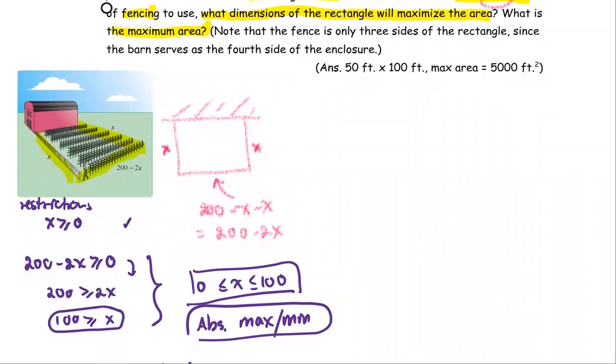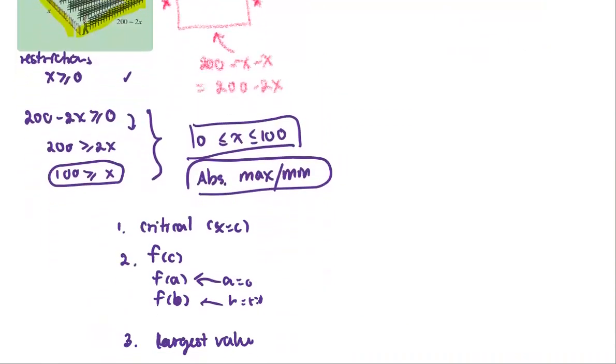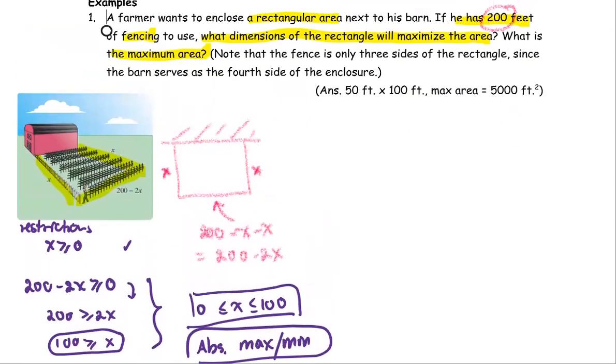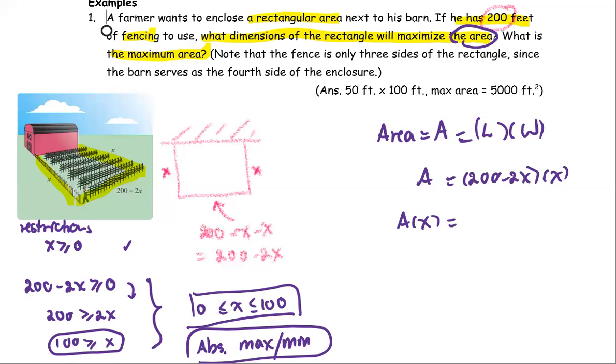And what function are we going to use? We're going to find out the largest value, largest of what? Largest of the area. So set up the area function based on this information. The area, which is A, is from the product of the length and the width. As the general formula, in our case, the length is 200 minus 2X, the width is X. So then we form the area function as A(x) = 200X minus 2X².